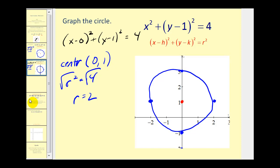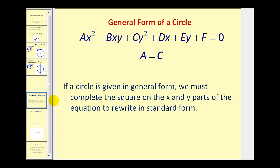Now let's take a look at general form. If we have the general form of a conic section, it'll be a circle if a equals c — meaning the coefficients of the x squared and the y squared terms must equal each other. If that's the case, we have a circle. What we can do is complete the square on the x and y parts of the equation to rewrite this in standard form and then graph the circle.